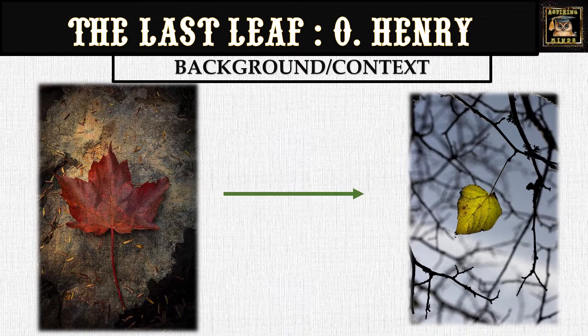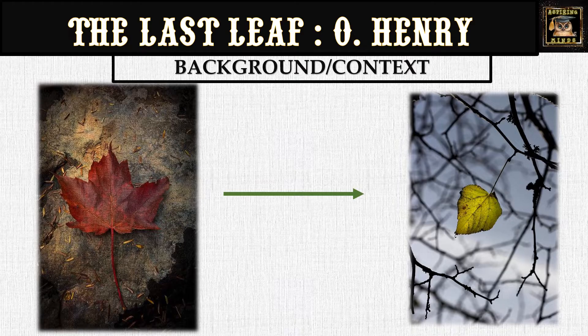The Last Leaf is set in an old house during the season of autumn. Two young artists, Sue and Johnsy, live together. Johnsy falls seriously ill with pneumonia, becoming convinced that she will die when the last leaf falls from an ivy creeper outside the window. Sue is very desperate to save her friend and tries various methods to distract and uplift Johnsy's spirits.